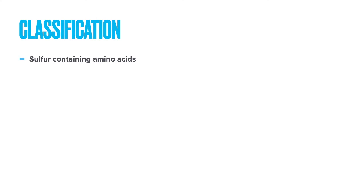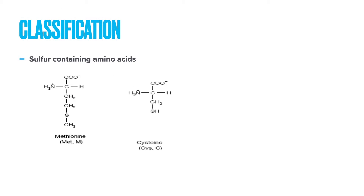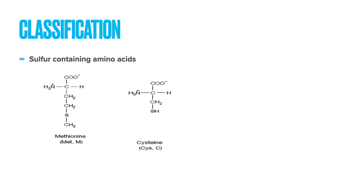Our next classification is sulfur-containing amino acids. There are two sulfur-containing amino acids: methionine and cysteine. In methionine, the sulfur is not free — it is making a bond. Whereas in cysteine, the sulfur is free as an SH group, also called a thiol group. This SH group can interact with another cysteine in a polypeptide chain to form a disulfide bridge. So cysteine and methionine are the sulfur-containing amino acids.